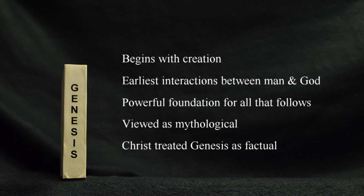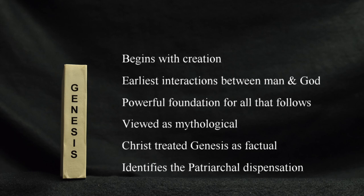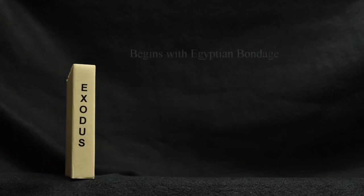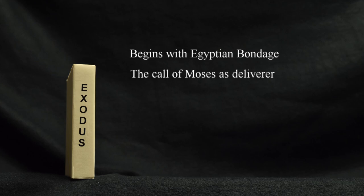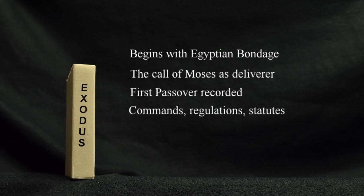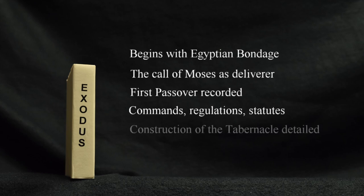The book records an earlier dispensation known as the Patriarchal Period, which we'll talk about in more detail in a later video. Exodus begins with the life of the Hebrews in Egyptian bondage and records how God chose Moses to deliver the children of Israel. Important events such as the first Passover are recorded here. Exodus includes commands and regulations to govern the people in their service to God.